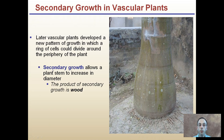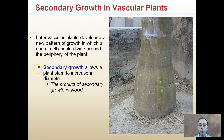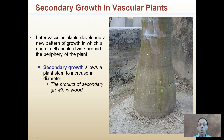Getting into secondary growth: later vascular plants developed a new pattern of growth in which a ring of cells could divide around the periphery of the plant. Secondary growth allows plants to increase in diameter — the thickening. The product of secondary growth is wood, as we see here. These would be examples of woody plants versus herbaceous plants that just grow like a tomato plant.